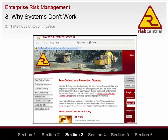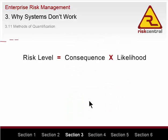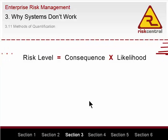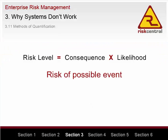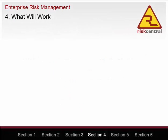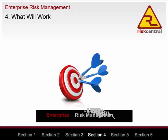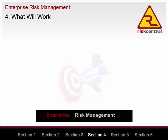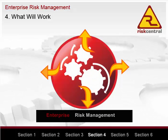To start with, your system should use the correct equation to calculate risk. Risk equals consequence times likelihood — or the risk of a possible loss scenario equals the consequence of the scenario times the likelihood of the scenario. This is a natural mathematical equation and can be very easily proven. Be very sceptical of any system which does not use a form of this equation as the basis for risk quantification. There are models or processes that will achieve ERM objectives and they can be uncomplicated, understandable and practical.